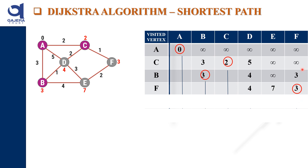Now the minimum cost is node F with distance 3. From F, the only non-visited adjacent node is E. The distance via F to E is 3 plus 2 = 5, which is less than the current value of 7. So we update E from 7 to 5. F is now marked as visited and will not be checked again.